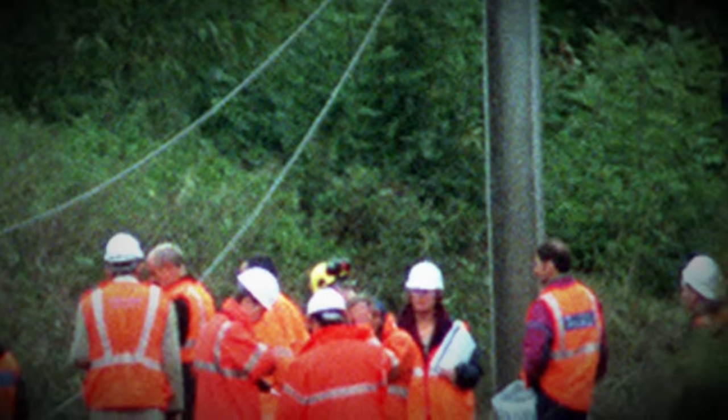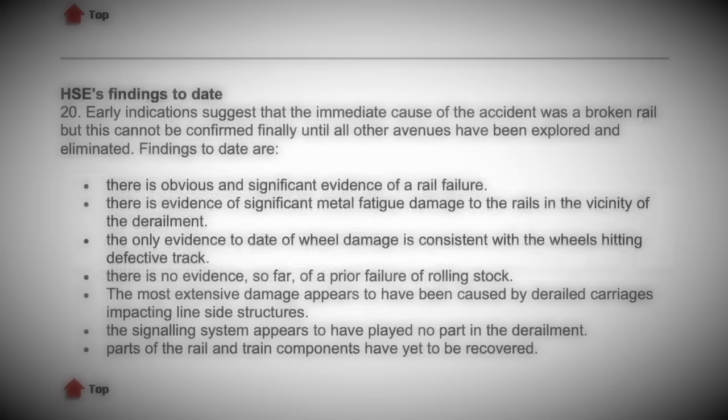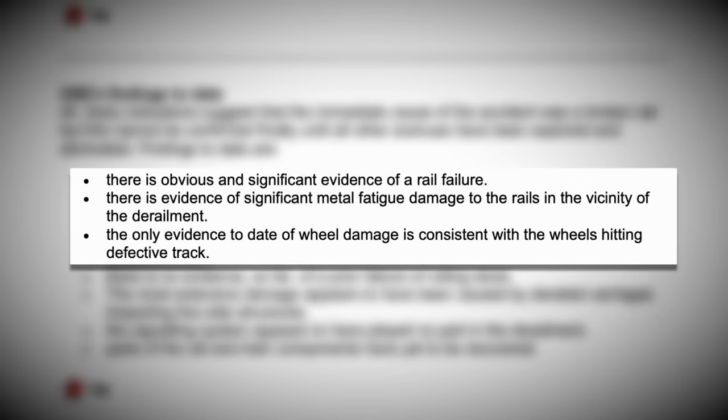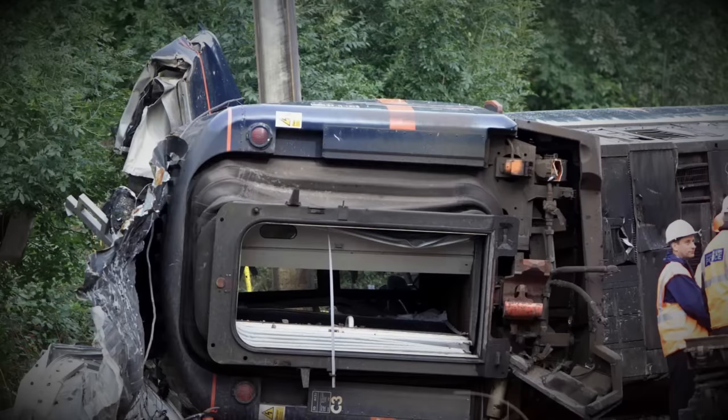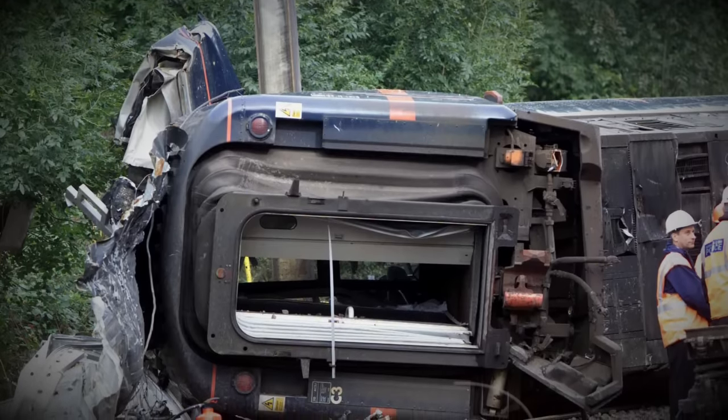Investigators from the BTP, HSE and HMRI were dispatched to the crash site and they would find some very concerning hints at what had caused the disaster. Initially, during the first search, it was found, as said in the HSE interim 48 hours report, there is obvious signs of significant evidence of rail failure. There is evidence of significant metal fatigue damage to the rails in the vicinity of the derailment. The only evidence to date of wheel damage is consistent with wheels hitting defective track.